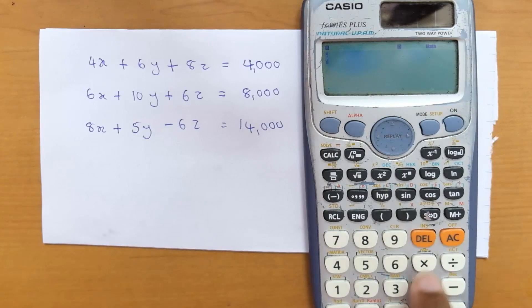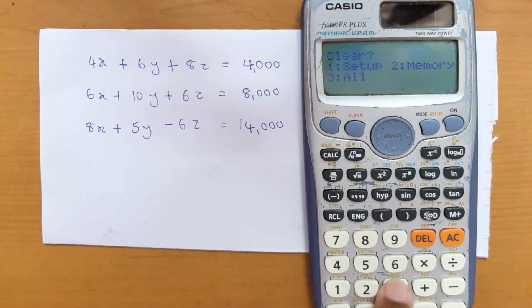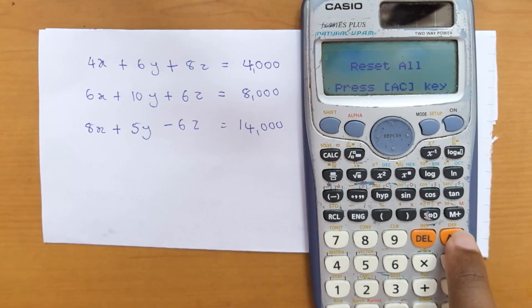Press Shift, then press 9. You will get a screen like this. Clear everything which is in number 3 All. Press equals, then press the AC key. Now everything is clear.